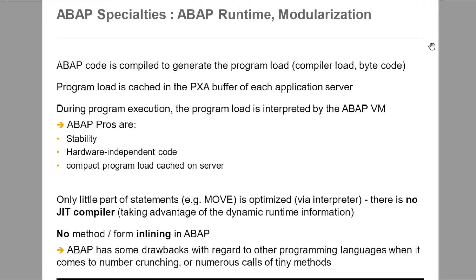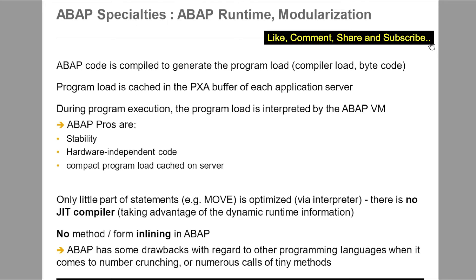The ABAP code is compiled to generate the program load, which is the compiler load and the byte code. The program load is cached in the PXA buffer of each application server. During program execution, the program load is interpreted by the ABAP VM.